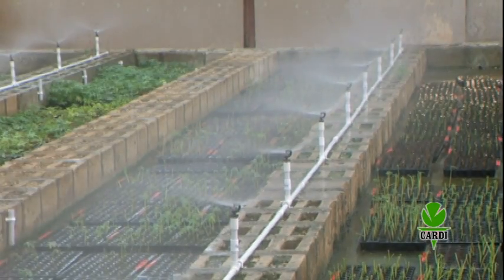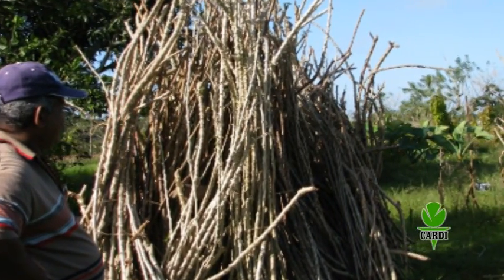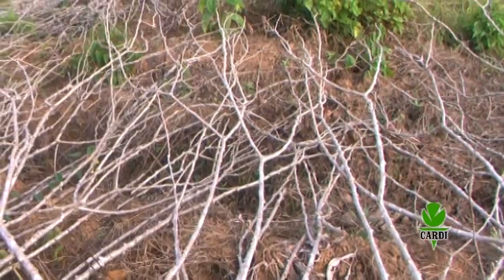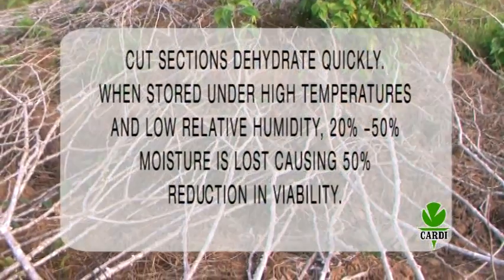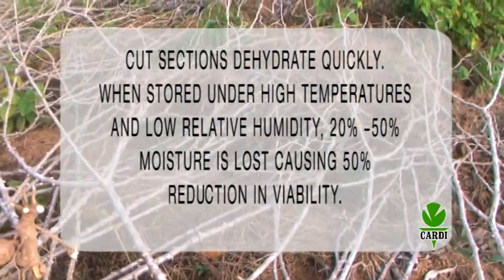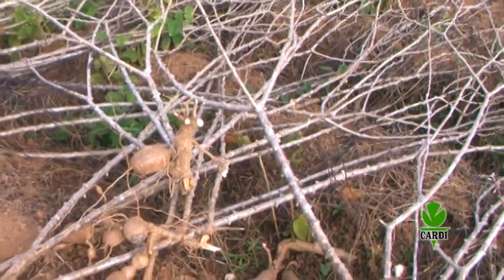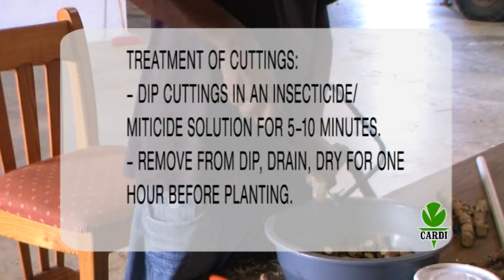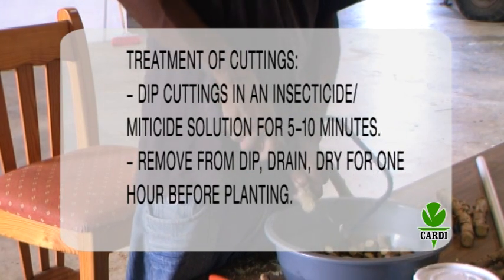Set viability is directly proportional to set moisture content, hormone content, and type. Cut sections dehydrate quickly. When stored under high temperatures and low relative humidity, up to 50% moisture is lost, causing a 50% reduction in viability. Latex flow is a good indicator of set viability. Cuttings should be dipped in an insecticide or miticide solution for up to 10 minutes, then drained for an hour before being taken to the field.